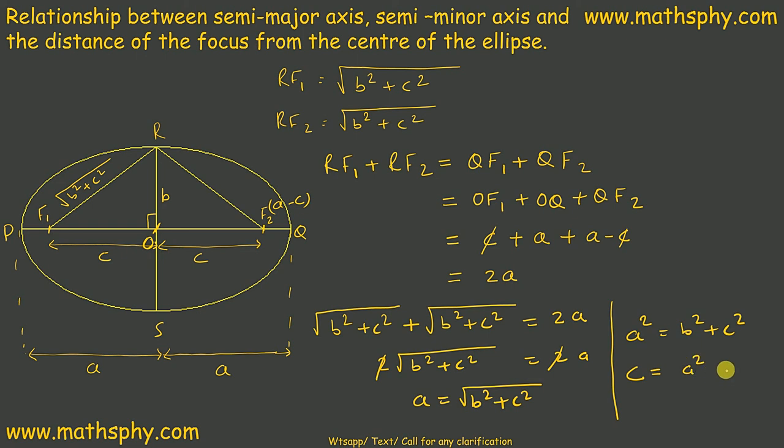C is equal to A square minus B square under root. You can keep shuffling and you will get A, B, C, anything you can find out. C is equal to root A square minus B square, A equals to root B square plus C square.